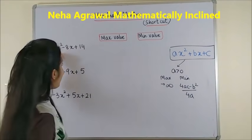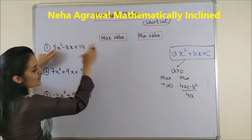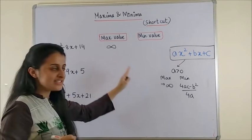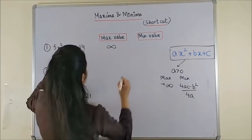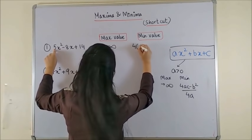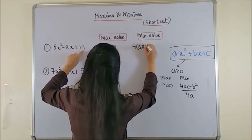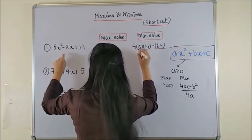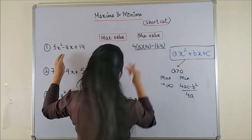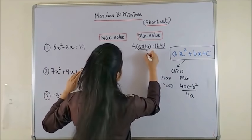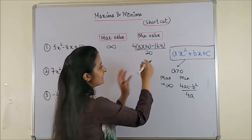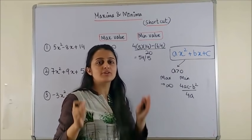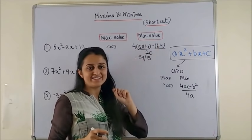So as was the case in this one, since your 5 was greater than 0, so your maximum value was simply tending towards infinity. And for minimum, you had 4 into A into C minus B square that is 64 upon 4A, which is 20. On simplifying the entire thing, we got the answer to be 54 by 5. It all depends on how quickly can you calculate this.